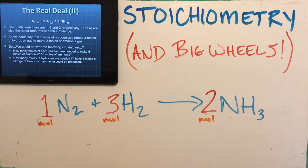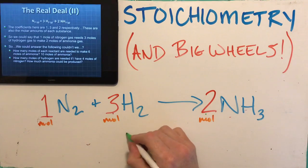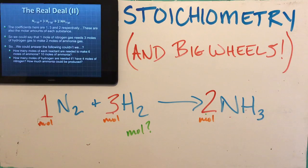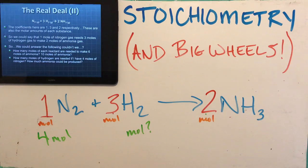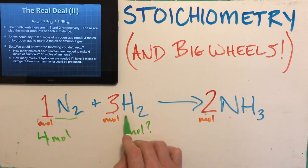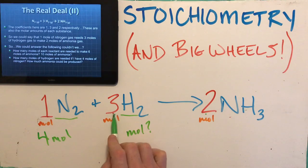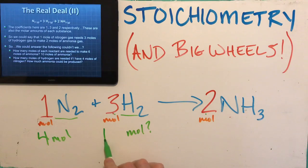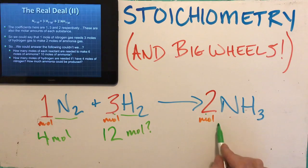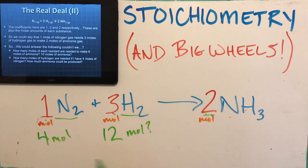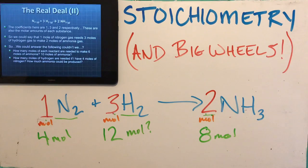How many moles of hydrogen are needed if I have four moles of nitrogen? If I have four moles of N₂, how much H₂ could react with that? In the original recipe, for every one nitrogen I need three hydrogens — this is three times greater. So four times three is twelve moles of H₂. How much ammonia could I make? For every one nitrogen there are two ammonia — this number doubles. Four doubles and gives us eight moles of ammonia.